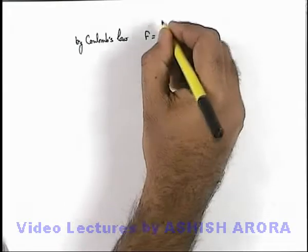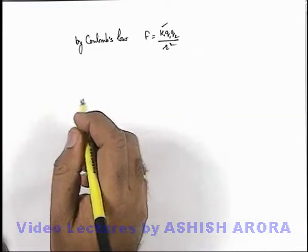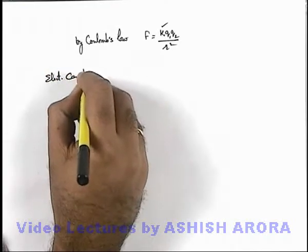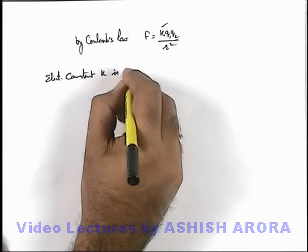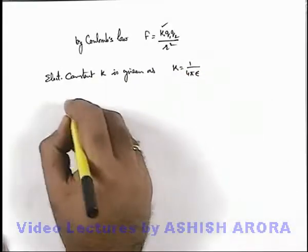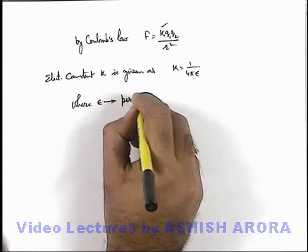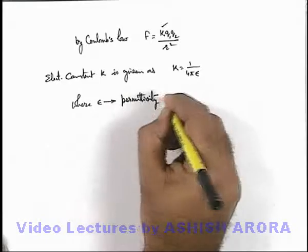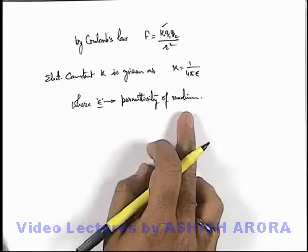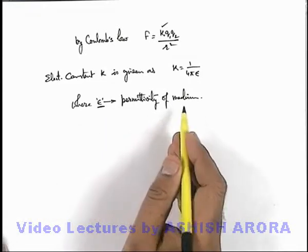Here k is the electrostatic constant which depends on the medium. This electrostatic constant k is given as 1 / (4π·ε), where ε (epsilon) is called the permittivity of the medium. This is a constant parameter which depends on the dipole characteristics of the medium — it decides how much a medium can get polarized when charges are submerged into it.